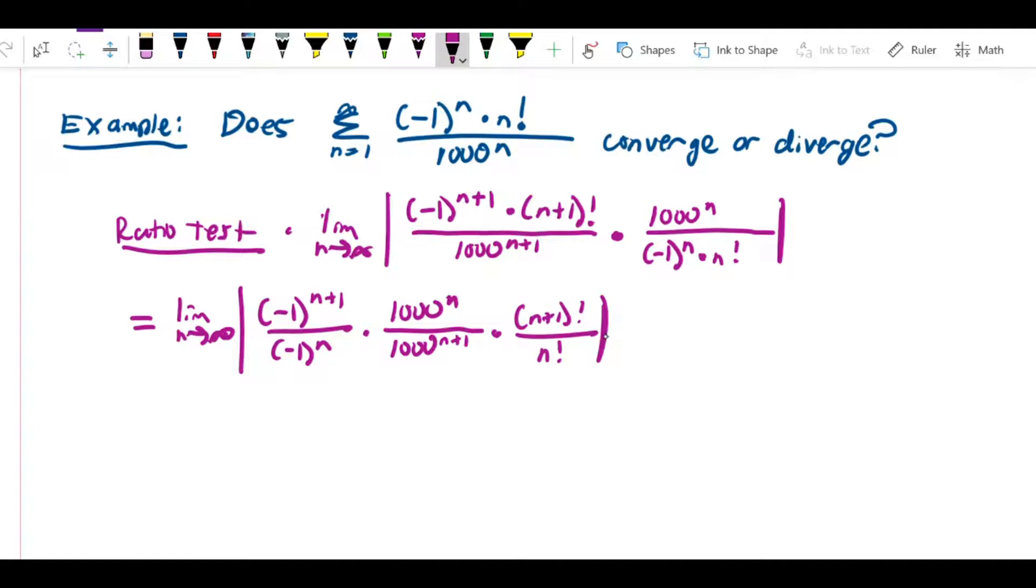So what we can see is that if we simplify these terms, negative 1 to the n plus 1 over negative 1 to the n is just negative 1. This is going to be 1 over 1000 when we subtract the exponents.